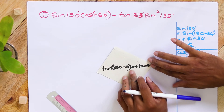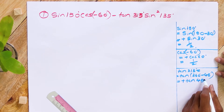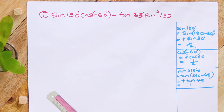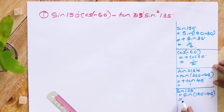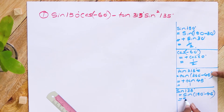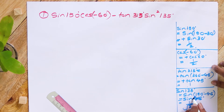Since cos(-θ) means +cos θ, cos(-60°) = +cos 60° = one half. For tan 315°, cos(-θ) means +tan θ, so it is +tan 45° which equals 1. Finally, sine 135° can be written as sine(180° - 45°), and since sine(180° - θ) = +sin θ, this equals sine 45° = 1 over root 2.